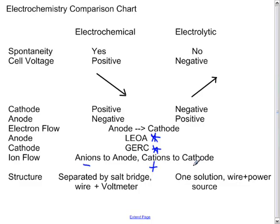The overall structure of each cell is different. In an electrochemical cell you have a salt bridge, wire, and voltmeter — the half-reactions are separated so they react slowly through a wire and a salt bridge. An electrolytic cell requires energy, so the two half-reactions don't need to be kept separately; they occur in one solution with a power source. This has been the electrochemistry comparison chart review video for Chemistry 12.